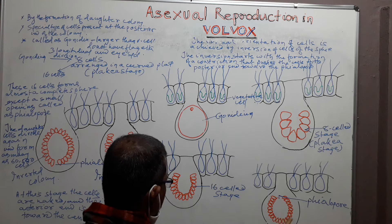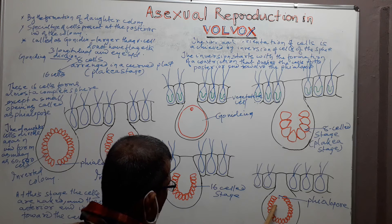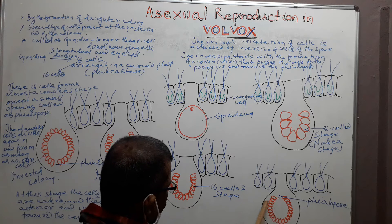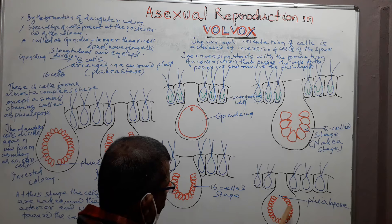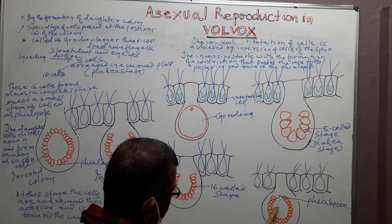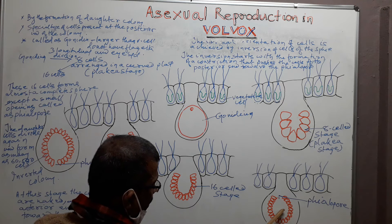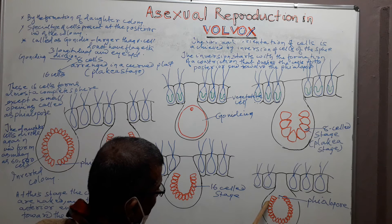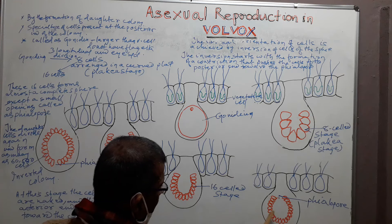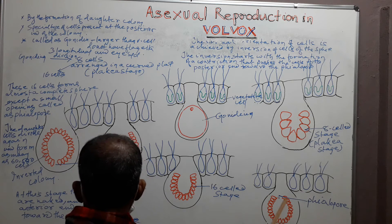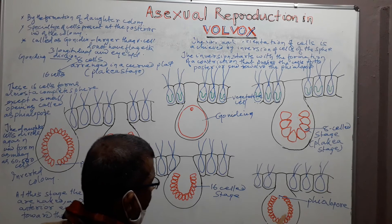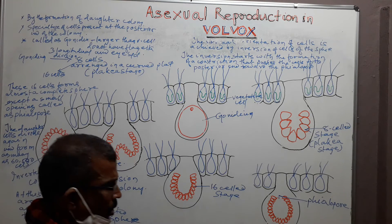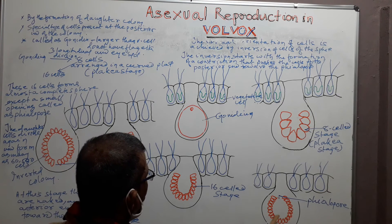at this stage the cells are naked. The anterior end of the cell is directed toward the center of the sphere and the posterior end is directed toward the outer side. So the orientation of the cell is opposite. This is the opposite orientation.